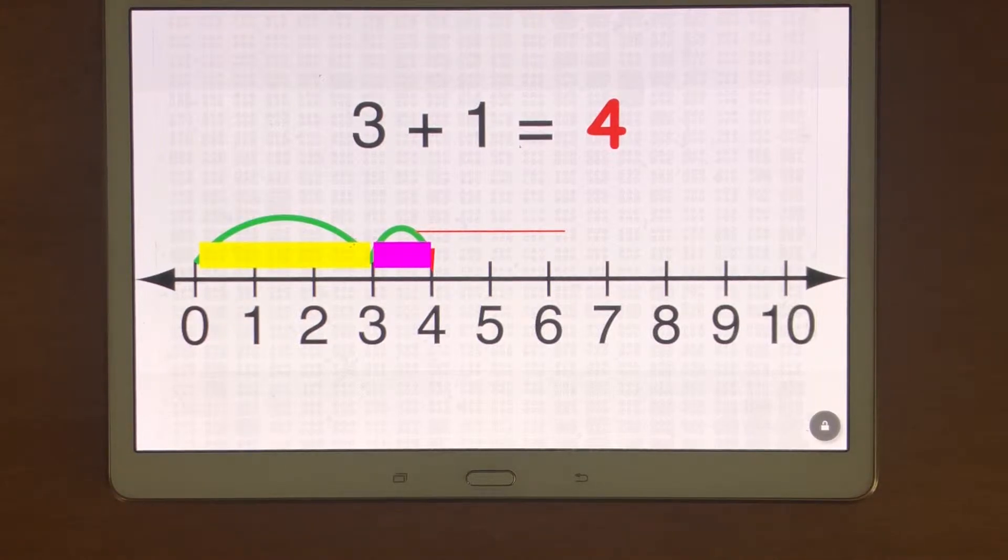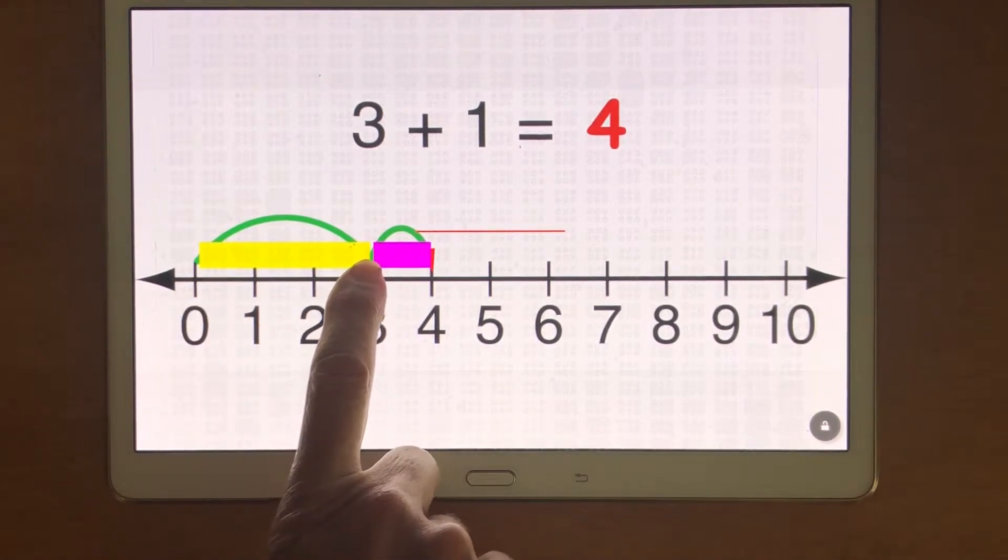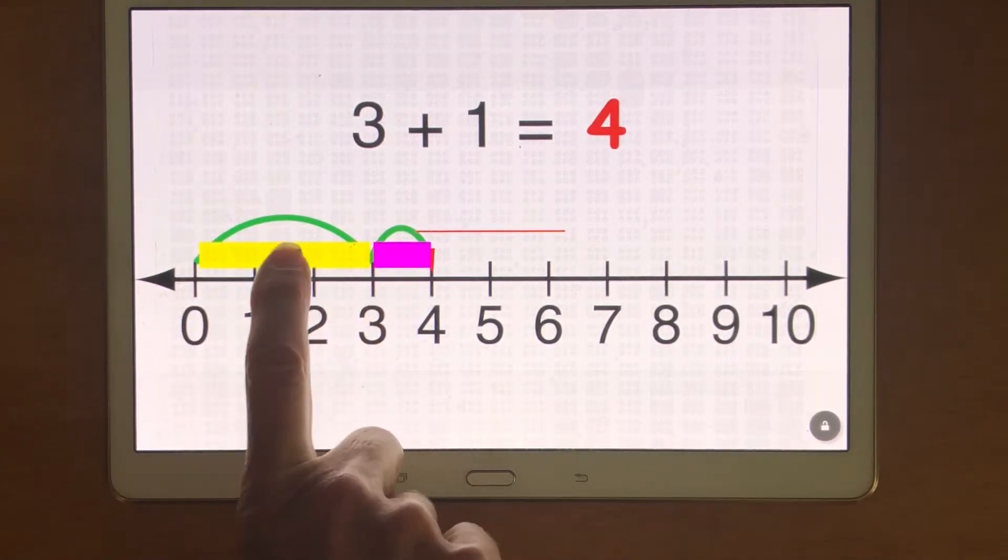So my students had a really challenging time trying to follow those curved arrows and to get the information they needed out of that curved arrow. So instead I added a yellow block from zero to three because my first move is three and I placed a three inside that block.